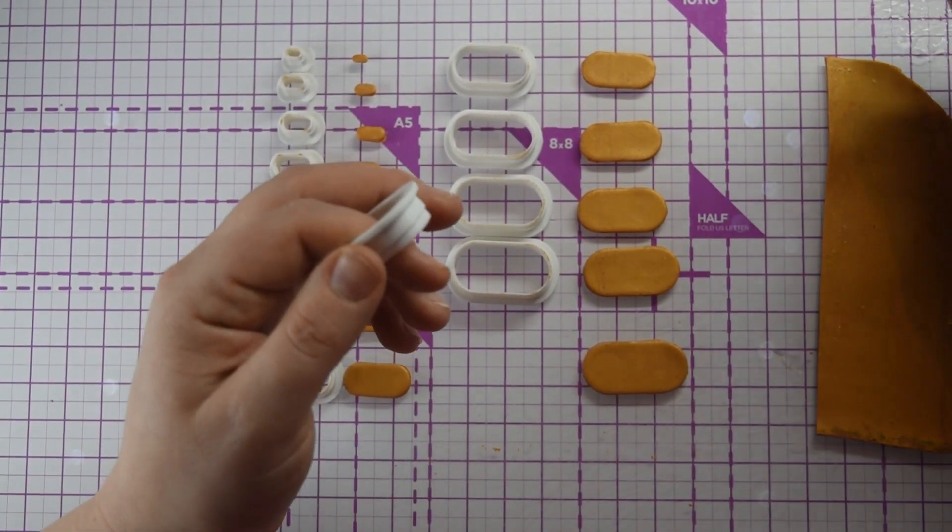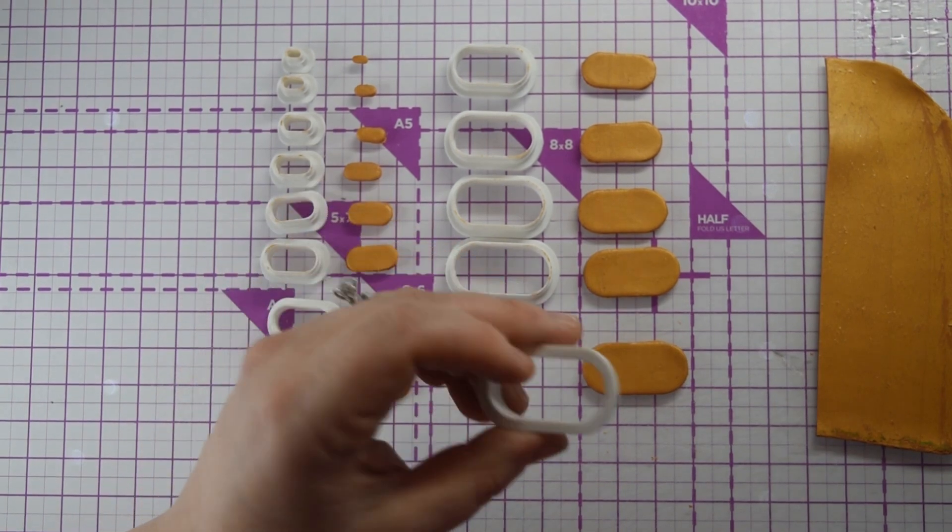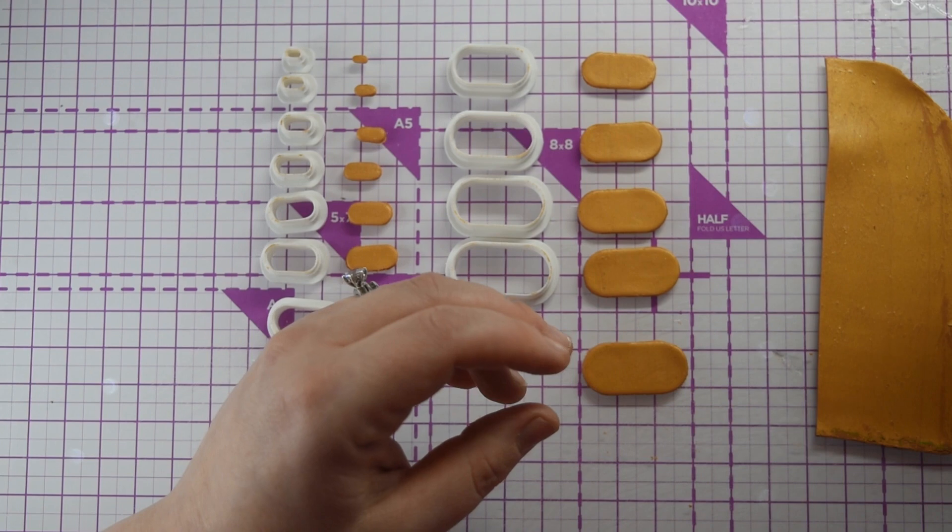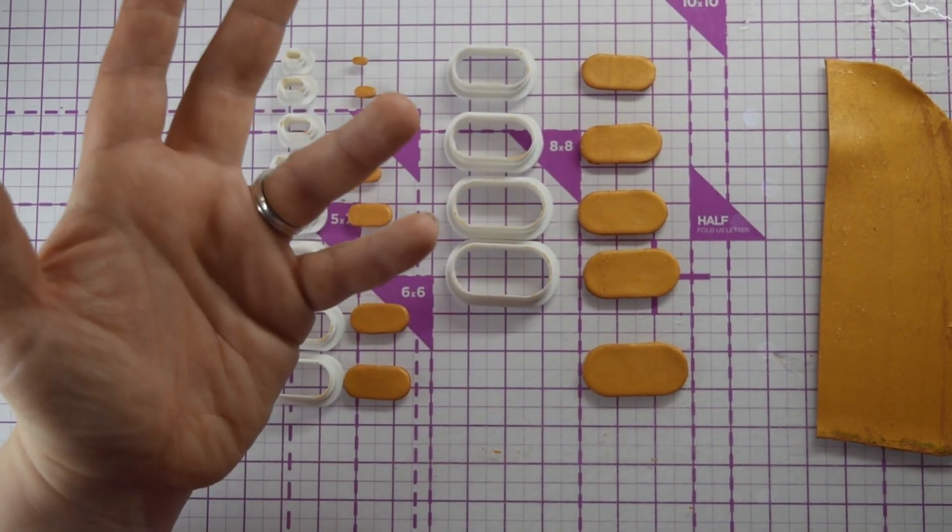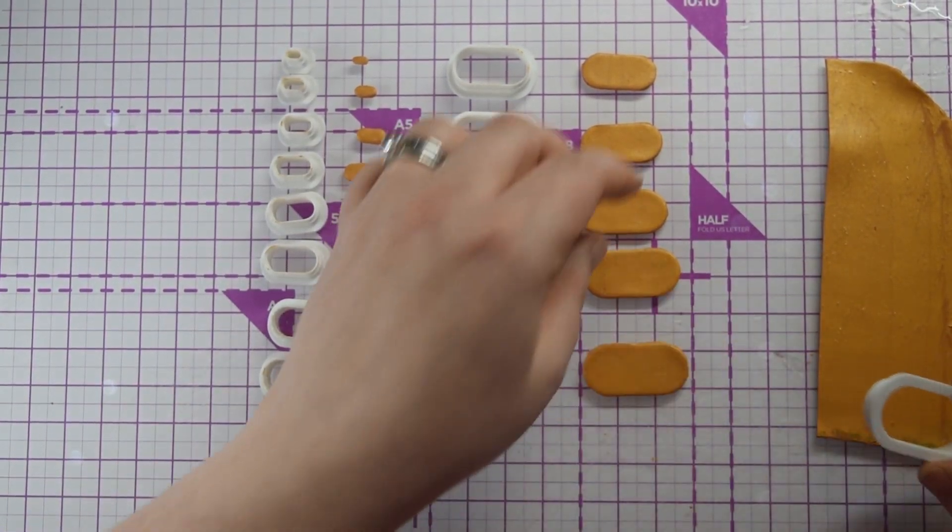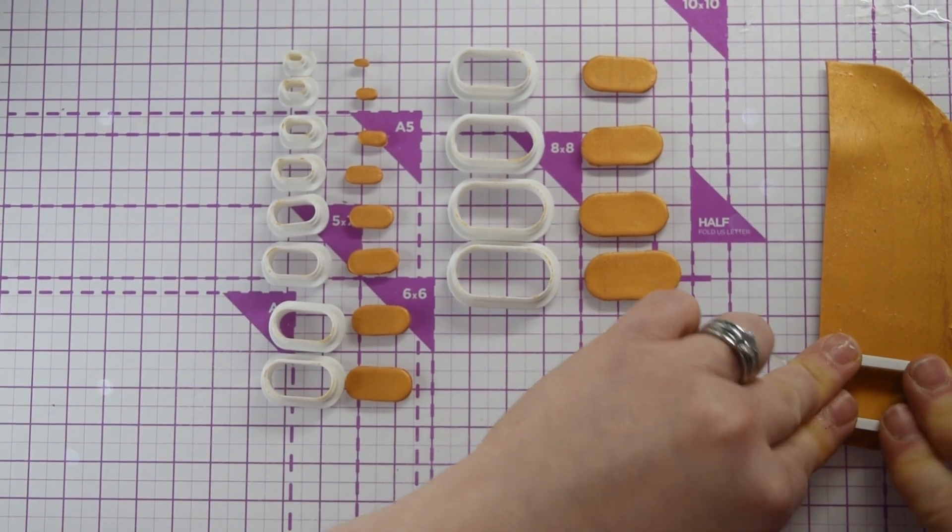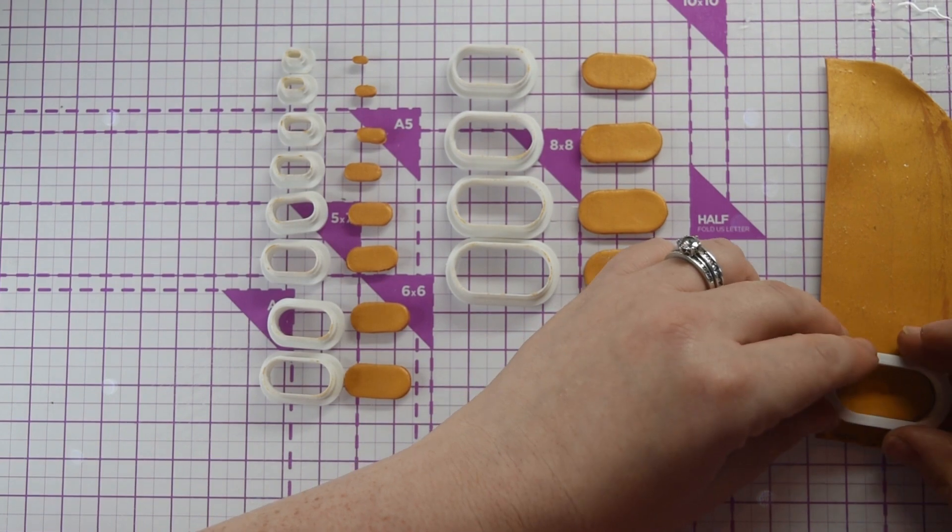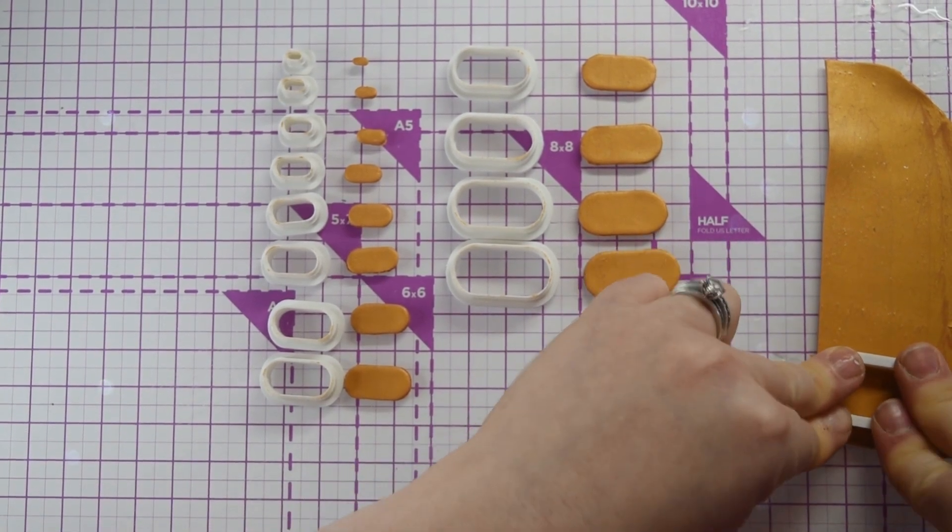So you just need something for a release. I'm using water—you can use cornstarch or several different powders. I've just dipped it into the water, pushing it down. Push it all the way through... get a bit more strength behind it.